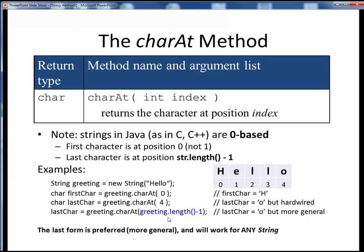The much preferred way, and the more general way that will work for any string, is to use an expression like this, which makes use of the length of the string offset by one for the last character. This part is equal to five, less one, is four, which of course gives us the same result as above, but in a fully general way.